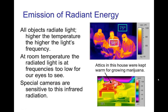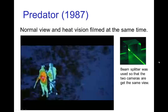Getting back to radiation, at room temperature or body temperature, there is a weak amount of radiation emitted. Our eyes are not sensitive to that radiation, which is mostly in the infrared, but special cameras can detect it. Here is a camera that has heat vision — it can basically see in the dark without visible light. The light emitted by people is enough for the camera to see them. This was used in the movie Predator, where a normal view and heat vision were filmed at the same time.